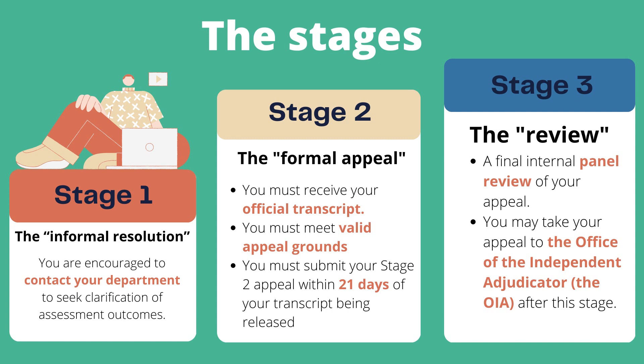A formal Stage 2 appeal can only be submitted after your transcript of results has been released. You will need to meet valid grounds to appeal formally and you must submit your Stage 2 appeal within 21 days of your transcript being released. At the end of Stage 2, you will receive a formal outcome letter from the college. The outcome will be either that your appeal is upheld, successful, or it is dismissed.